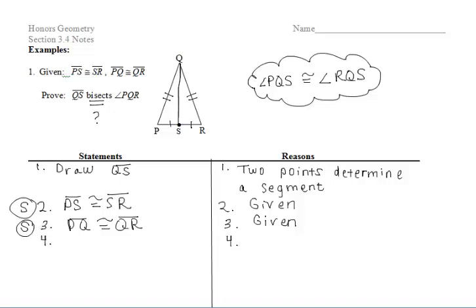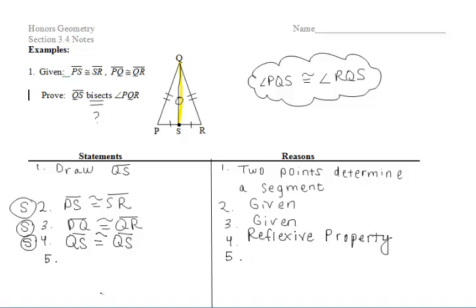Let's write in our other two givens, which gives us already two pairs of congruent sides within the triangles. So we want to prove these triangles congruent. And since these two triangles share side QS, we can use the reflexive property on that side and say that QS is congruent to itself by the reflexive property, which gives us our third pair of congruent sides.